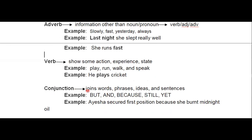Next is conjunction. Conjunction is a word that joins words, phrases, ideas, or sentences together. Examples: but, and, because, still, yet. For instance: 'Ayesha secured first position because she burnt midnight oil.' Here because is the conjunction — it is the connector that joins the two parts of the sentence.